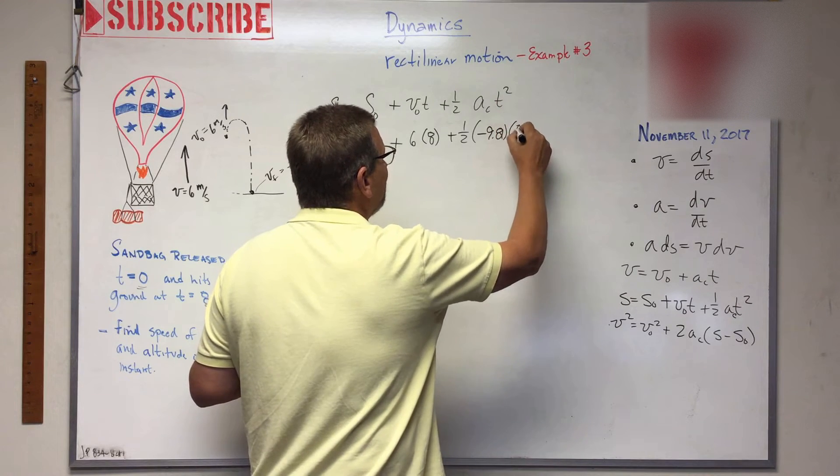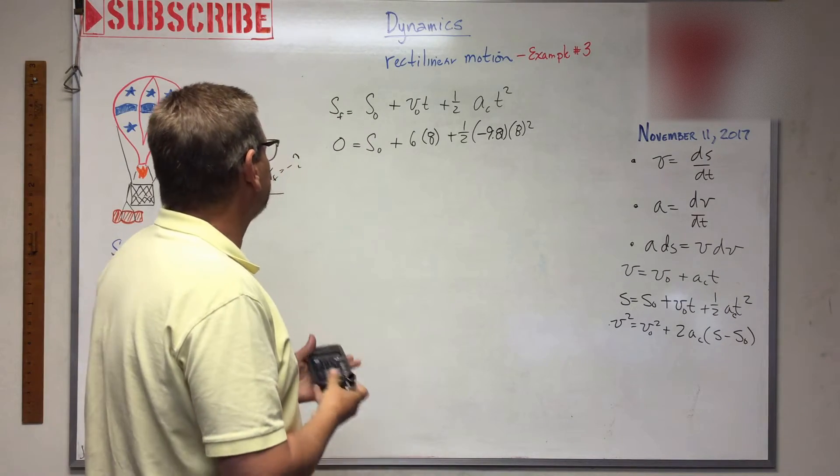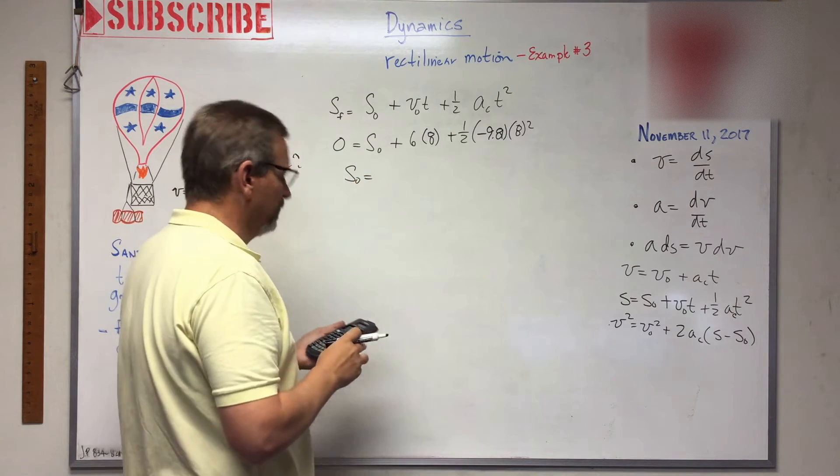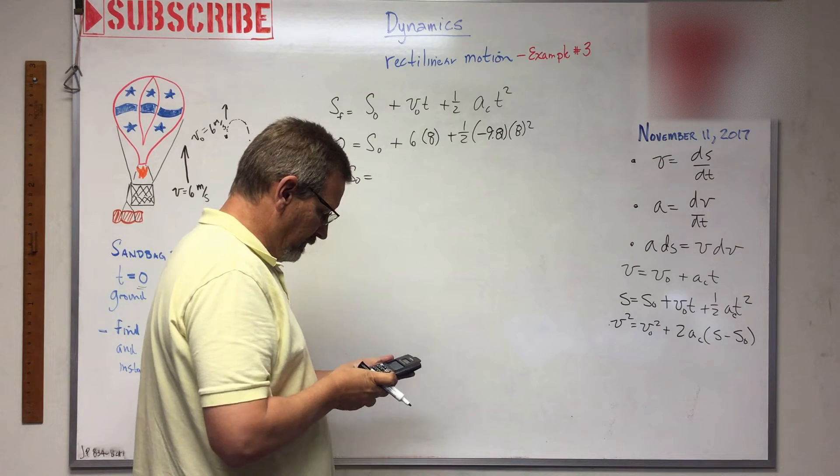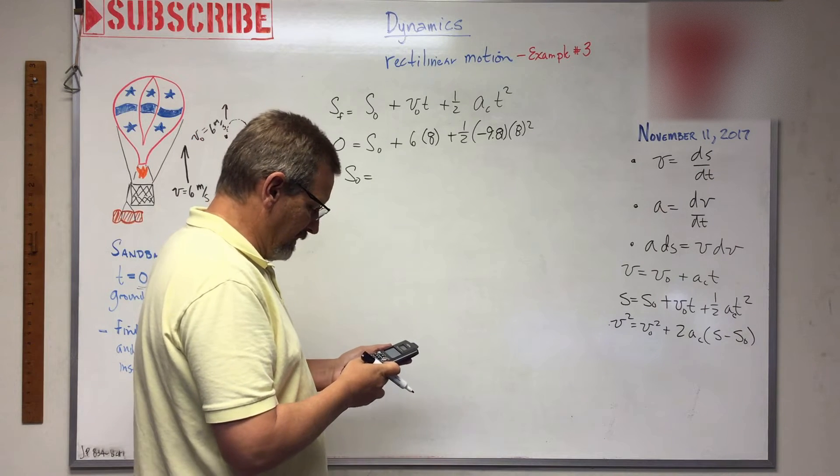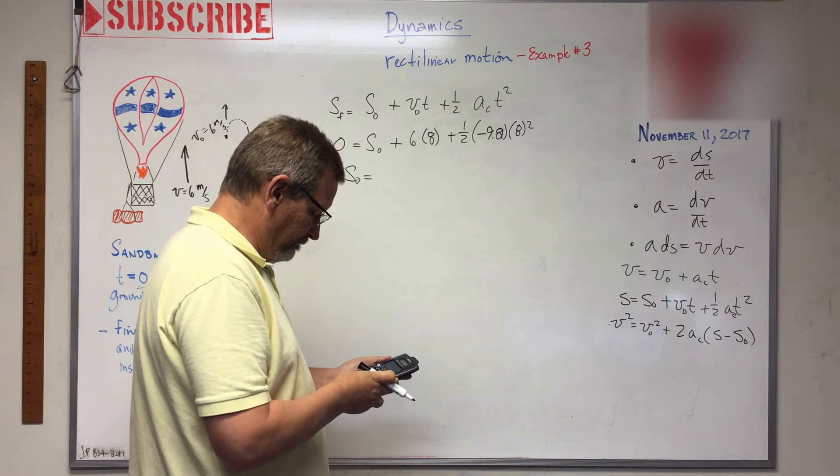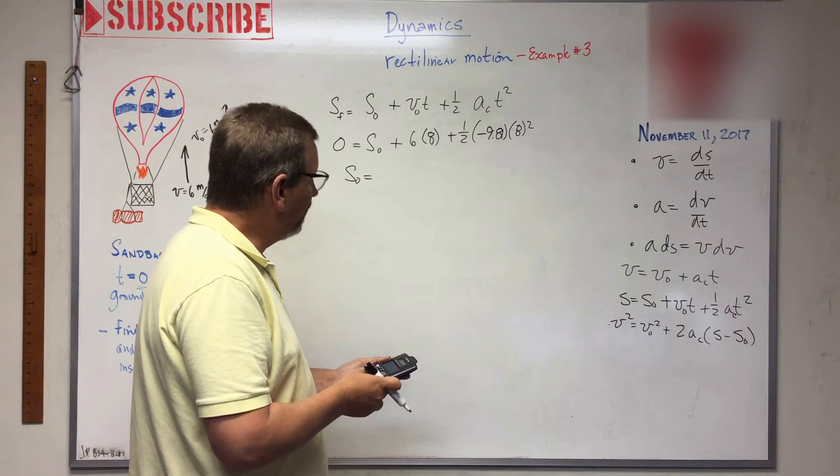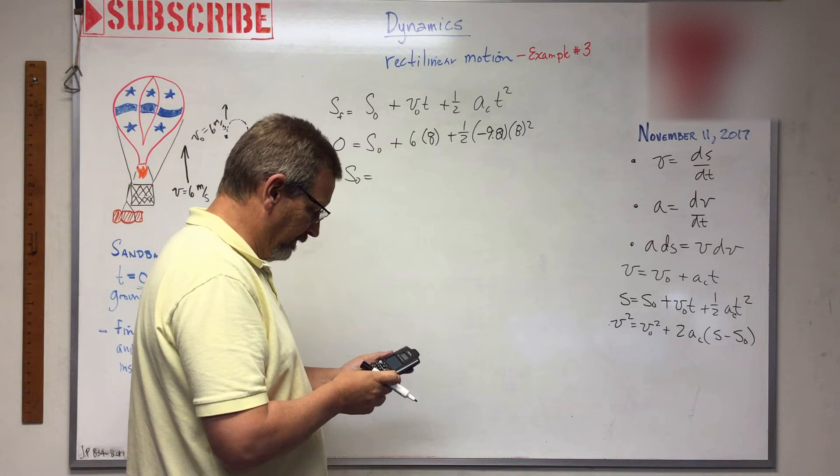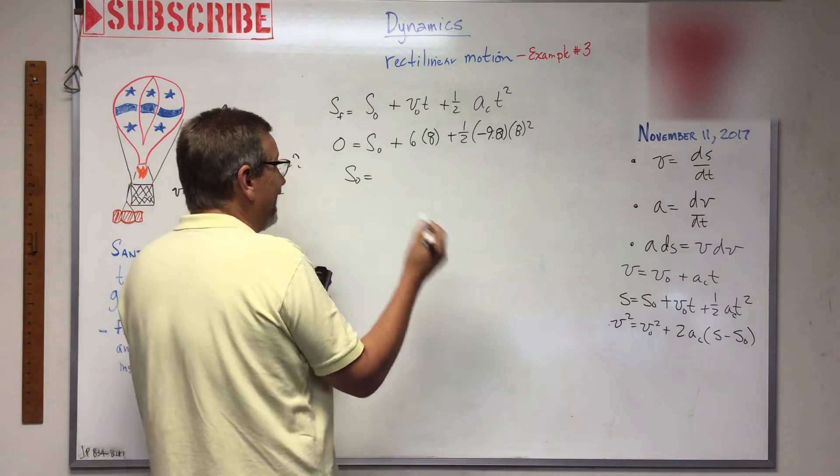Times t squared, which is eight squared. Here we go. So s_naught is equal to - let's see if we can do this - 48, right, minus 9.81 times 64 times 0.5.